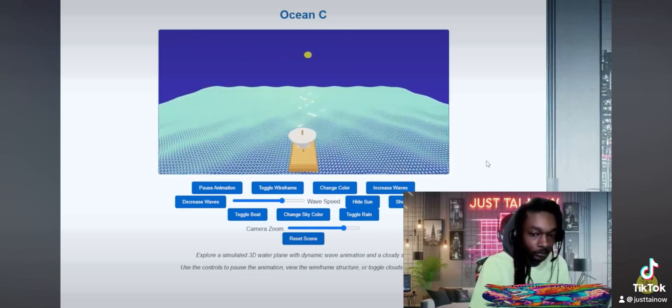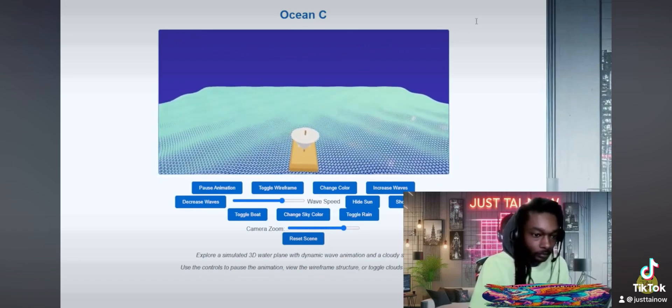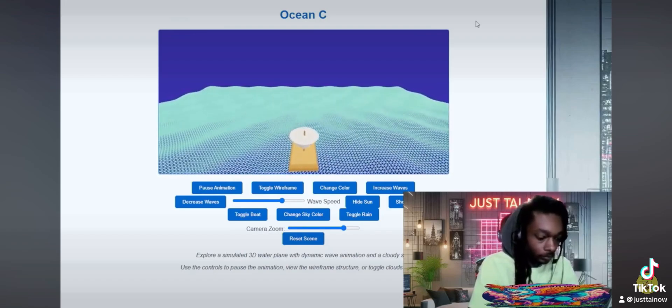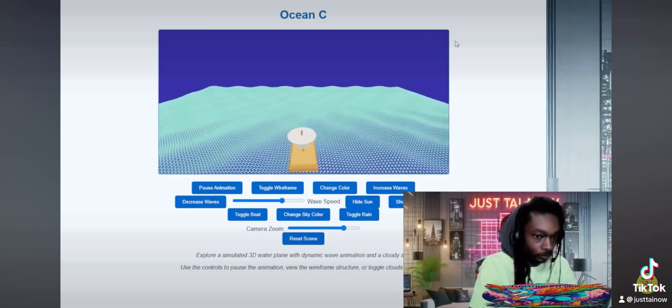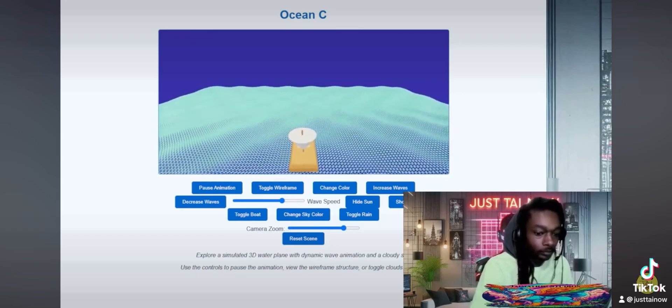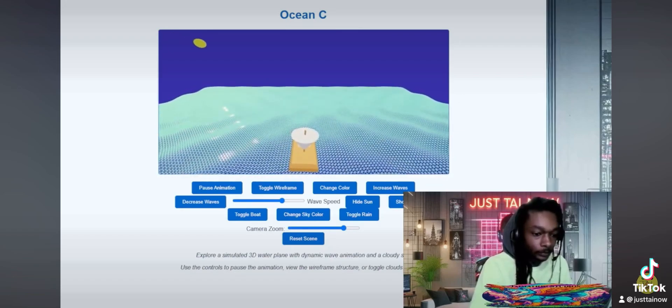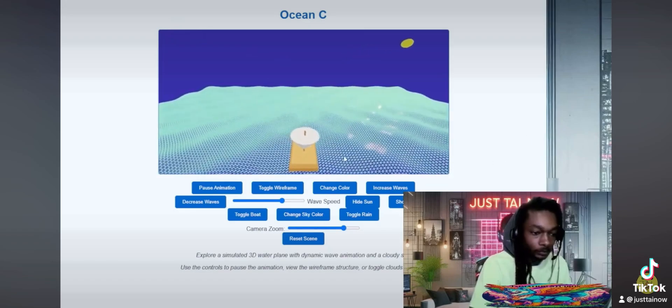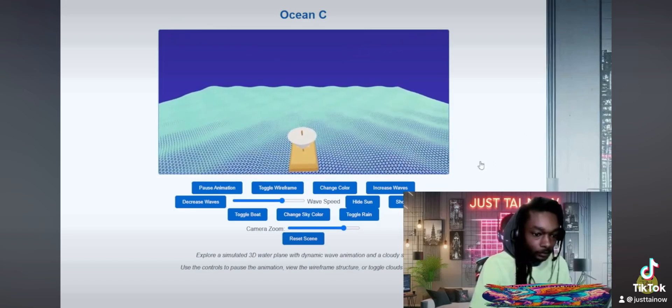And Farquaad himself embodies that need for control. He wants everything to be perfect—the perfect fairy tale ending, the perfect princess, the perfect kingdom. It all has to be exactly the way he wants it.